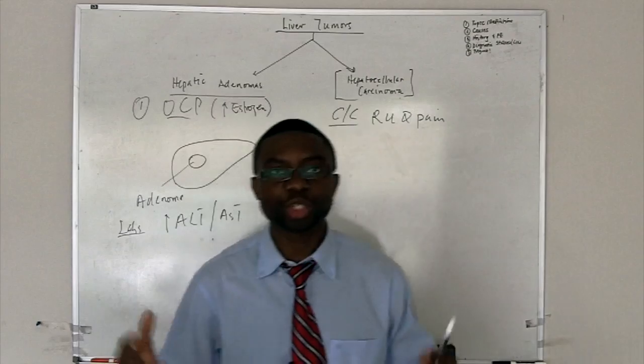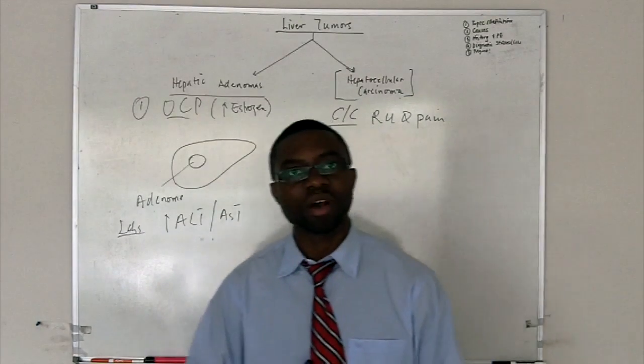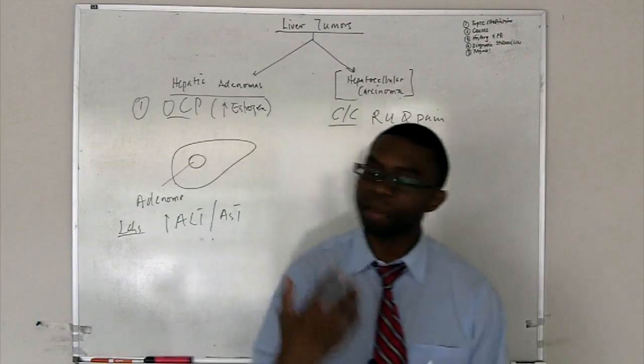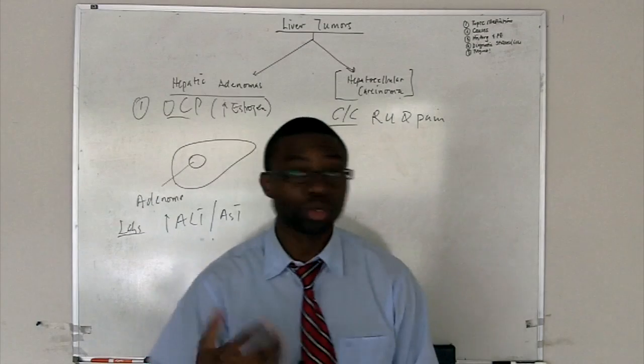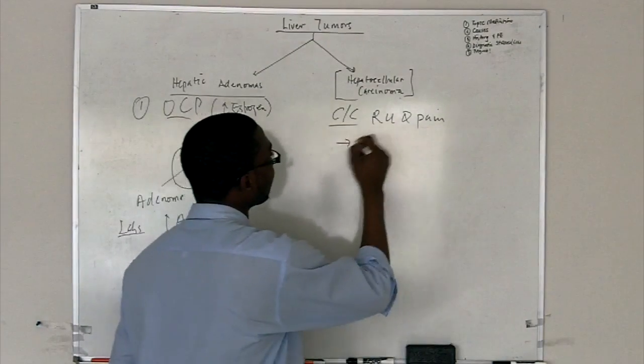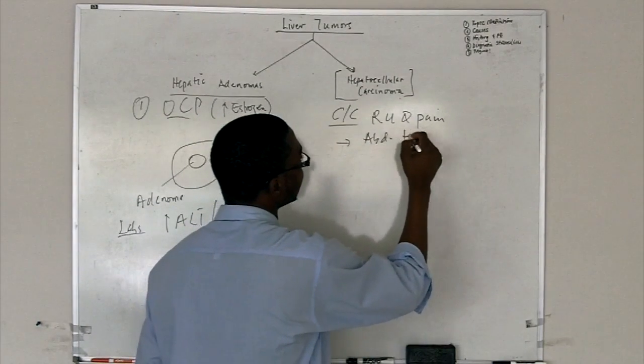They've got to be jaundiced. Just classic symptoms of liver cirrhosis. They can't metabolize bilirubin anymore. So they become jaundiced. Right upper quadrant pain, abdominal tenderness.